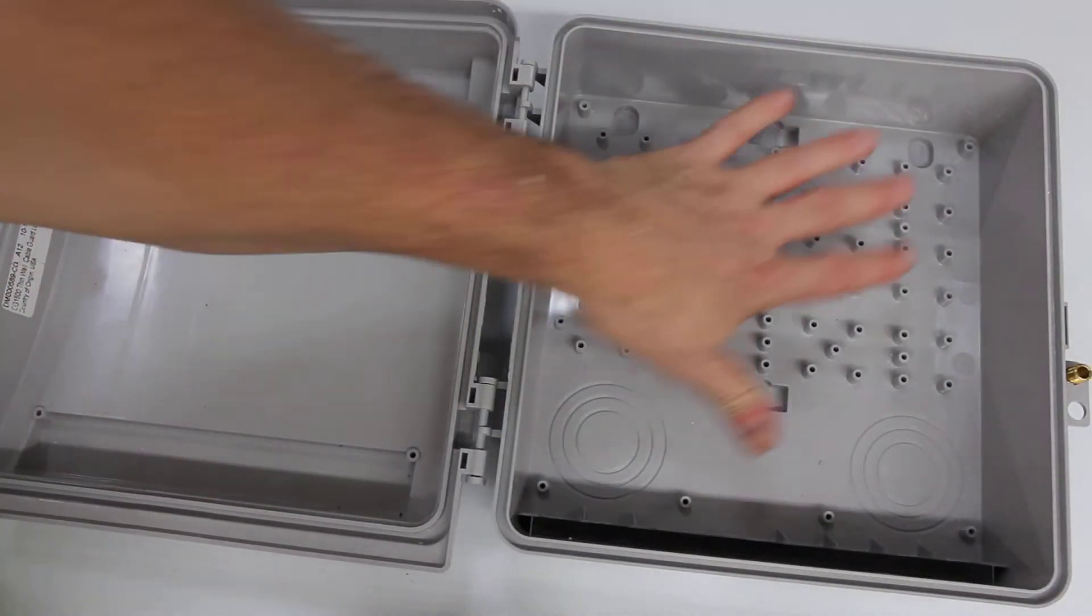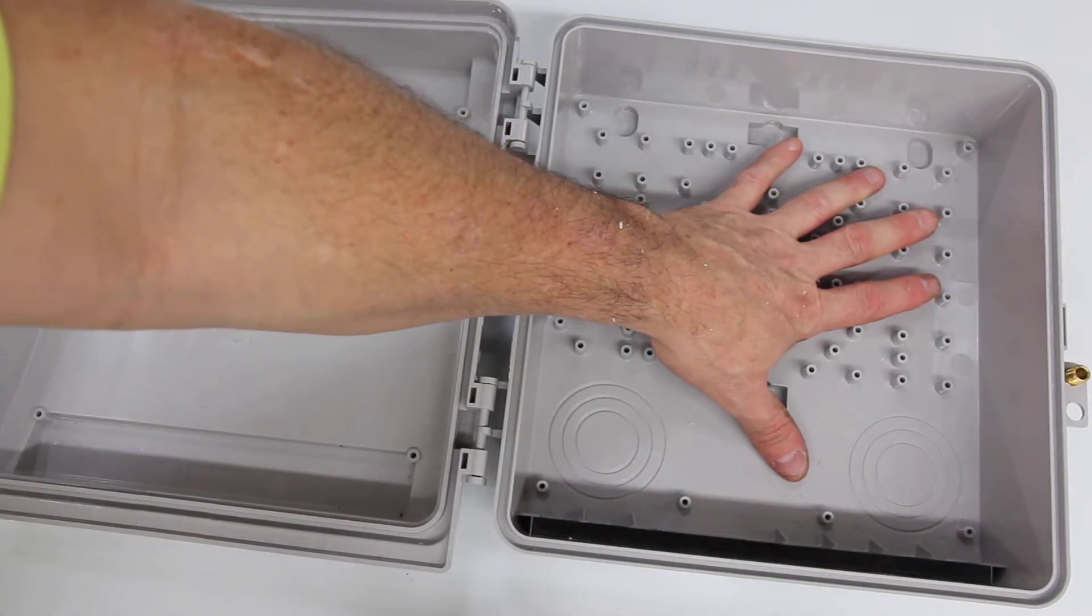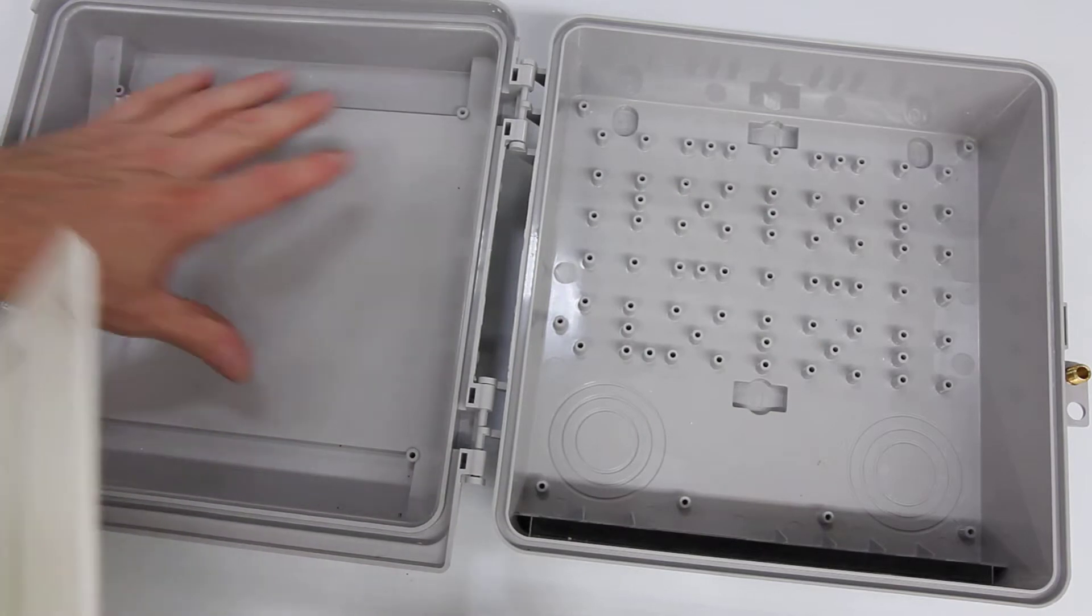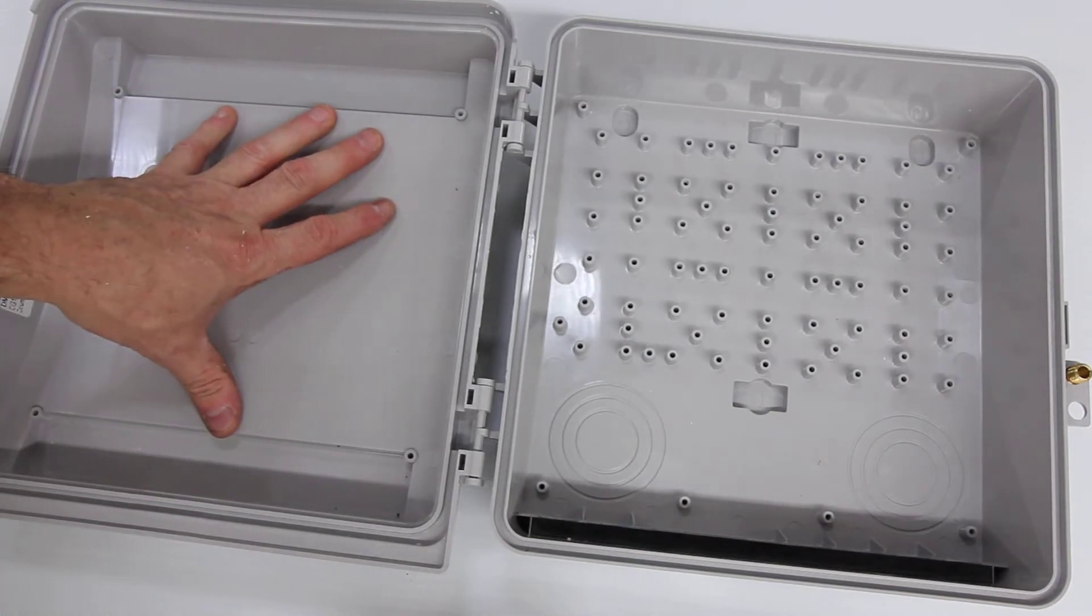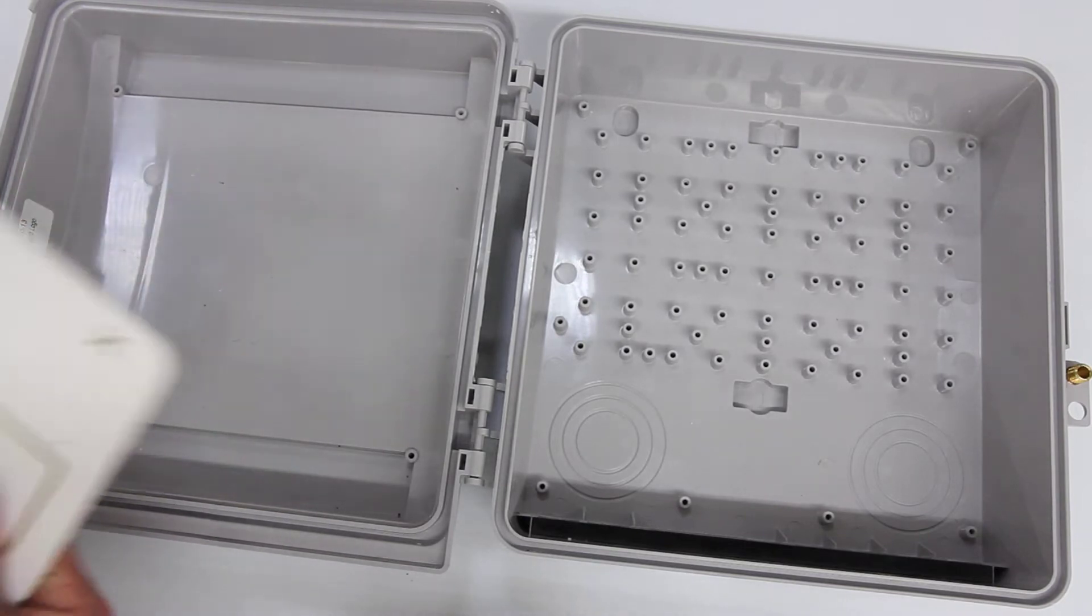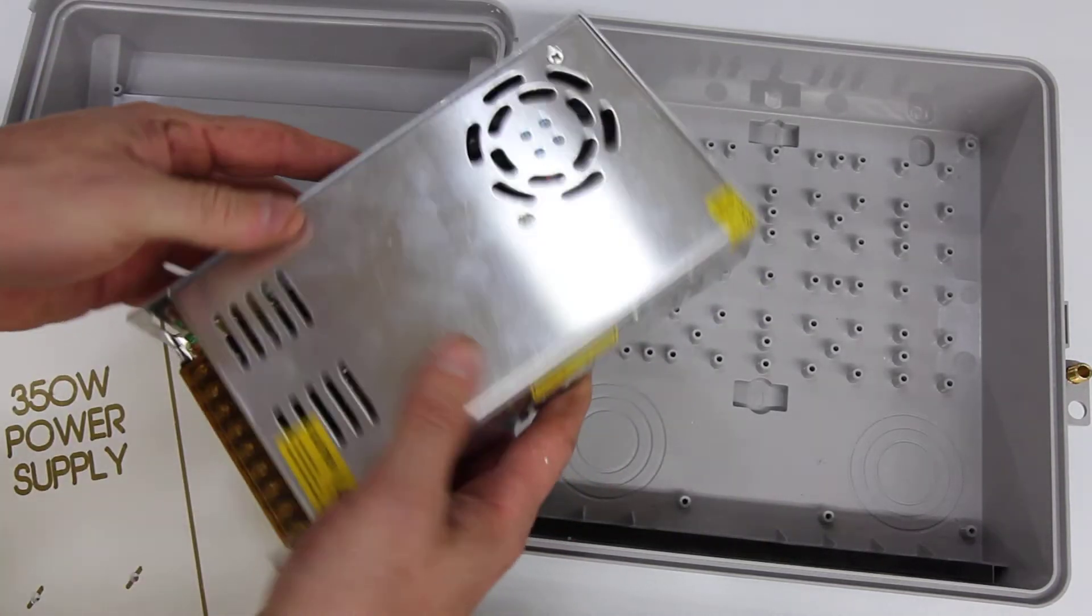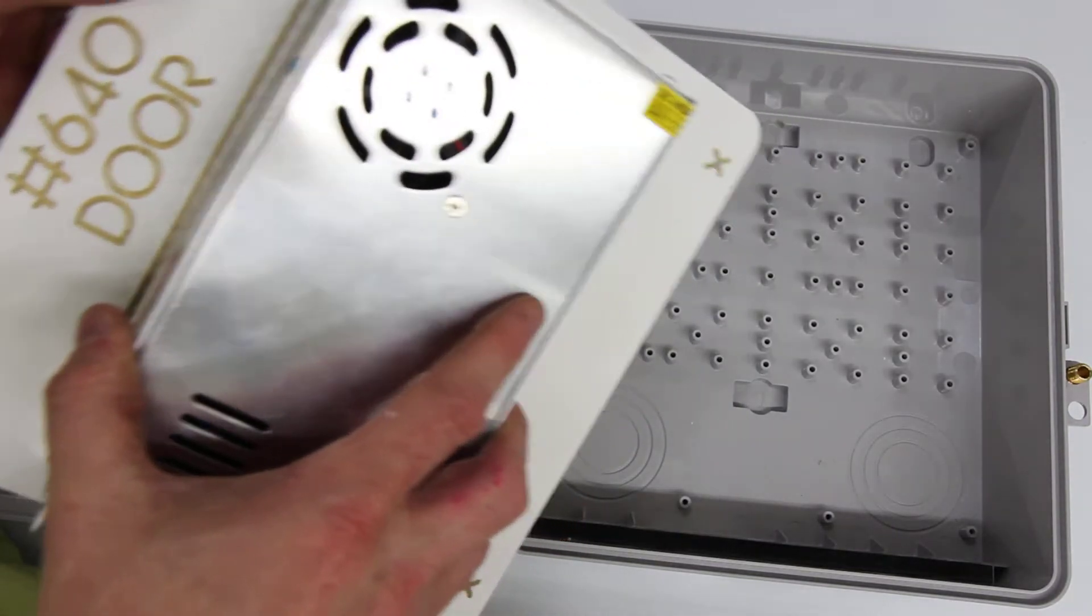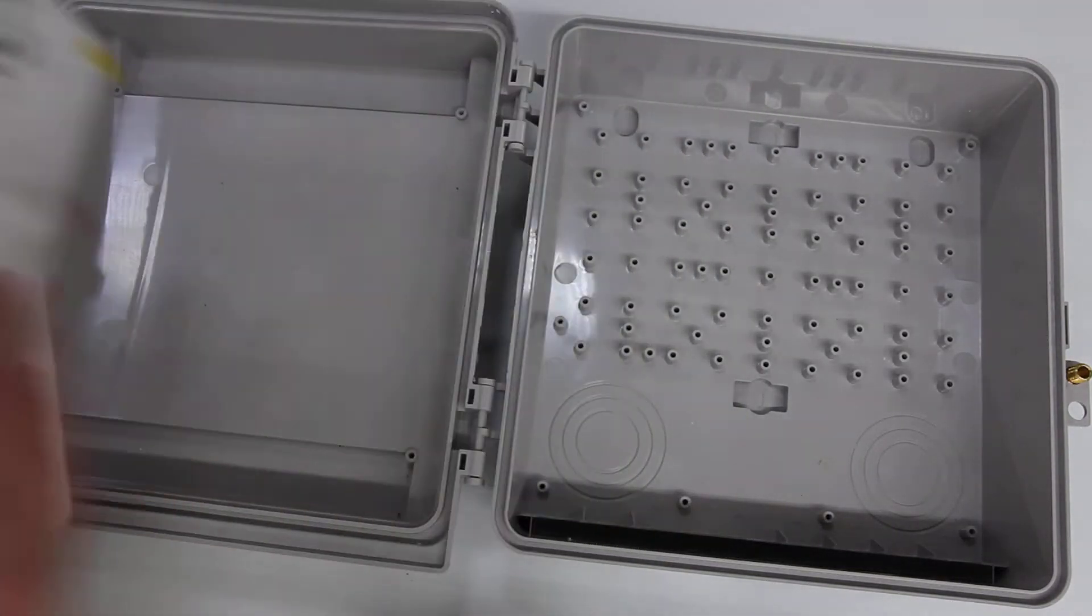Often you may use the side over here, the inside base, to mount controllers to. But there's an entire section over on the other side that allows you to use it for also mounting things like power supplies. Here we have one of our standard 350 watt power supplies, and this can be mounted to this adapter board. Let's go ahead and show you how to do that.